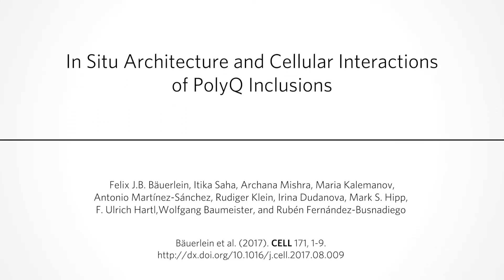A group of neurodegenerative disorders are caused by the expansion of polyglutamine, or polyQ, sequences in specific proteins. This renders the proteins aggregation-prone, and large inclusion bodies are found in the brains of patients. But how or whether these aggregates are toxic remains poorly understood.